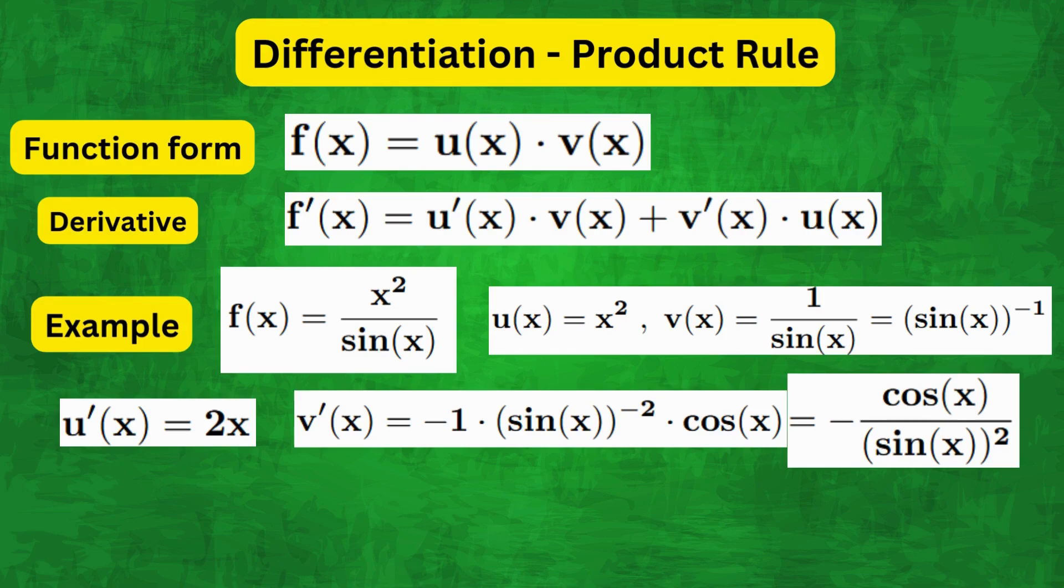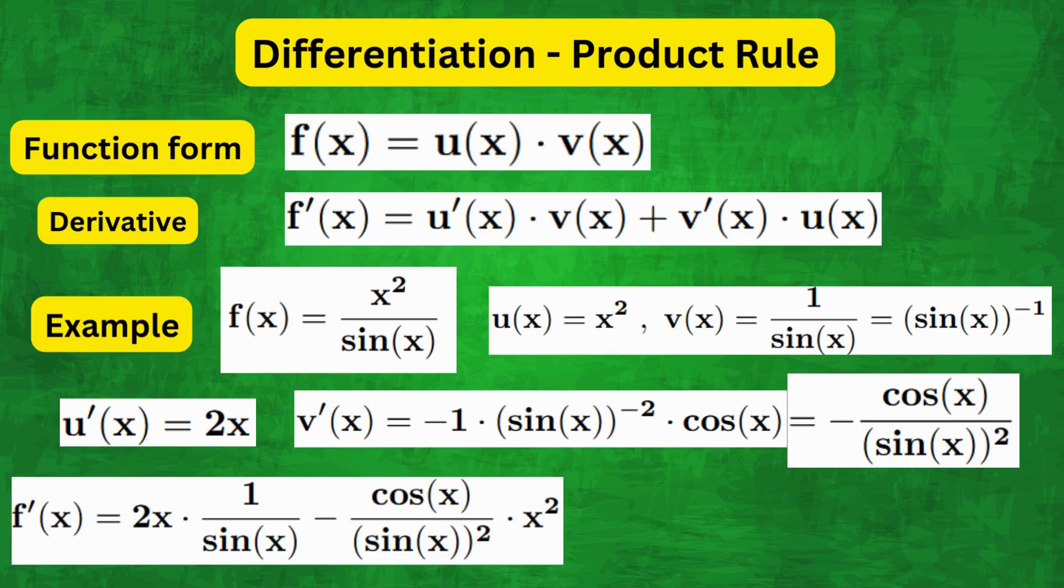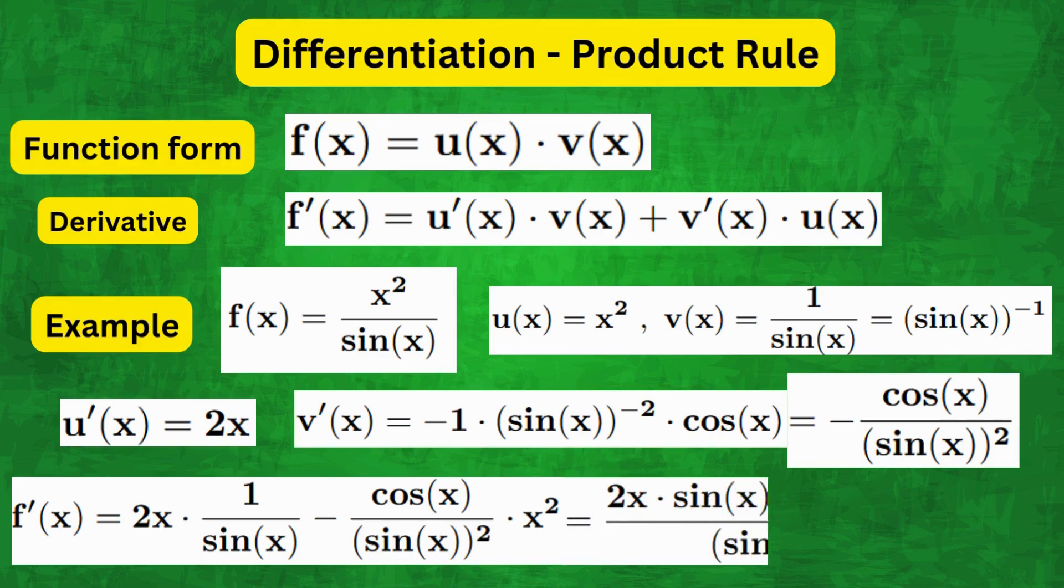So we can rewrite this as a single fraction by taking a common denominator, so we get (2x·sin(x) - x²·cos(x))/sin²(x).